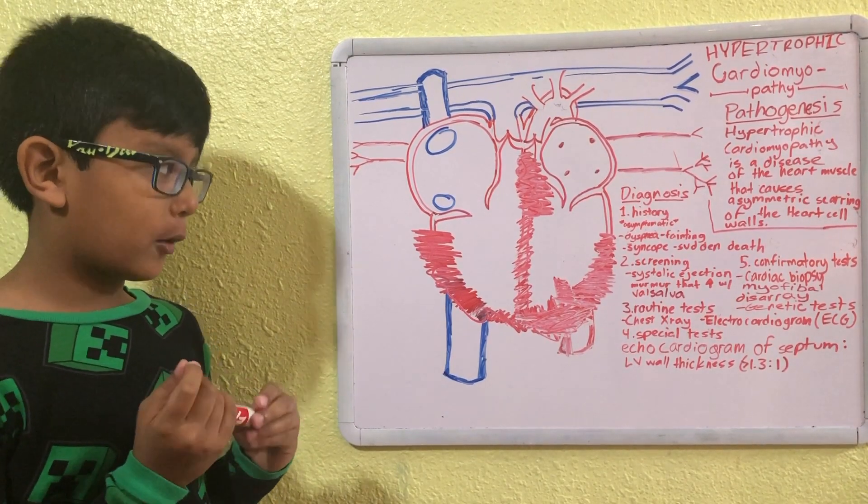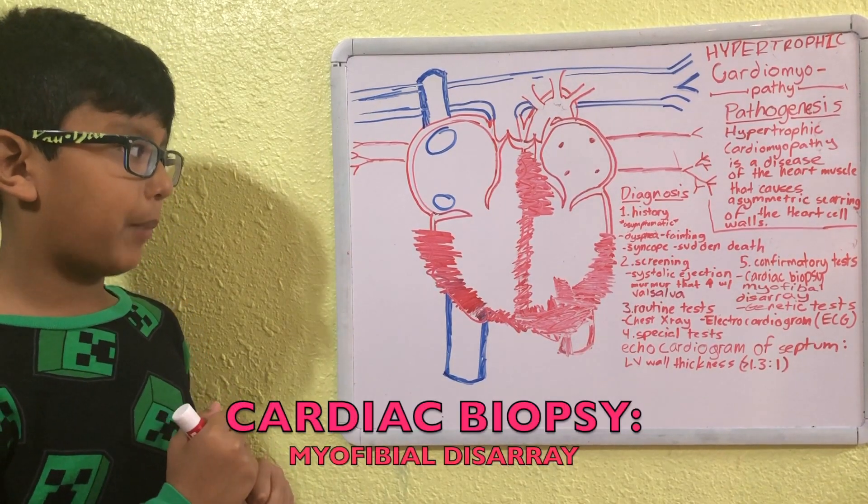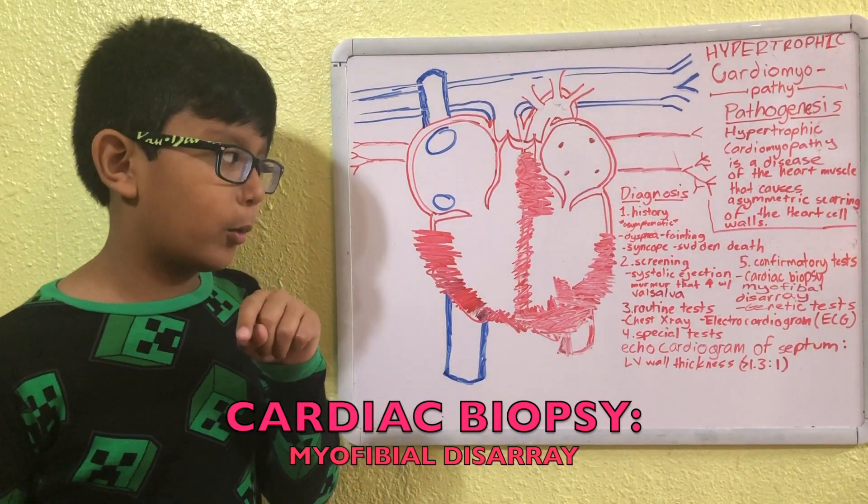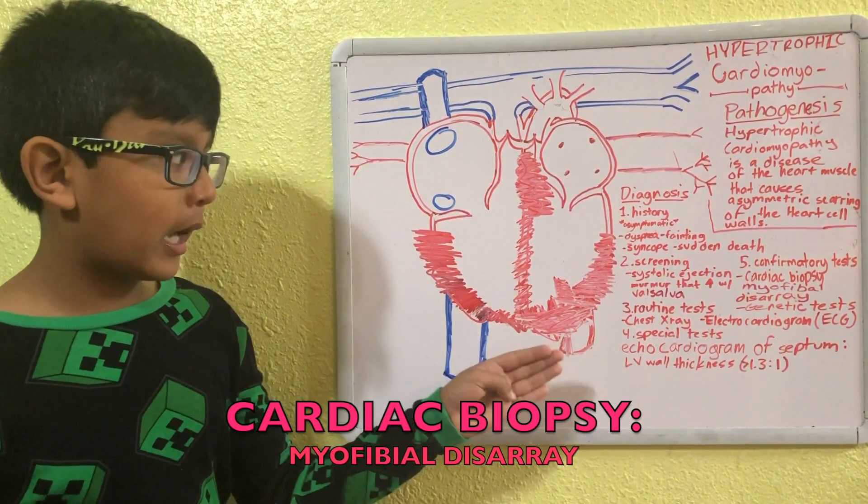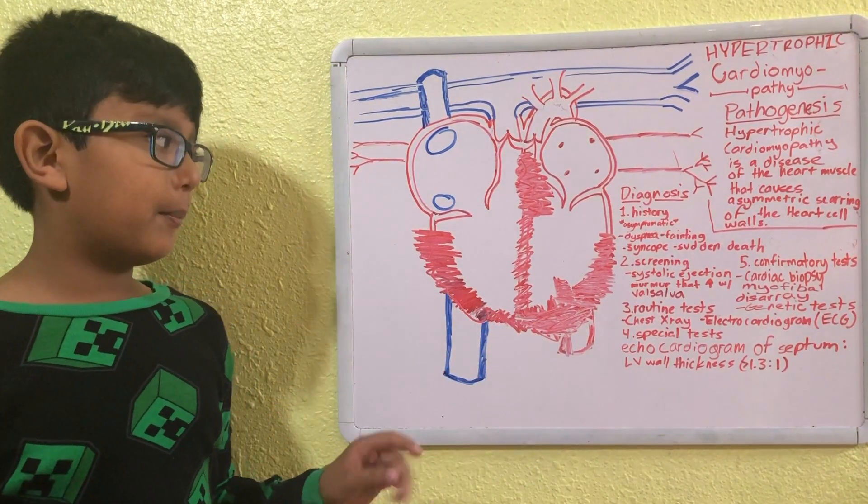Number five: confirmatory tests. So we're going to have, like, a cardiac biopsy, and if we look in the cardiac biopsy, what we're going to see is a myofibrillar disarray. Now, you might be wondering